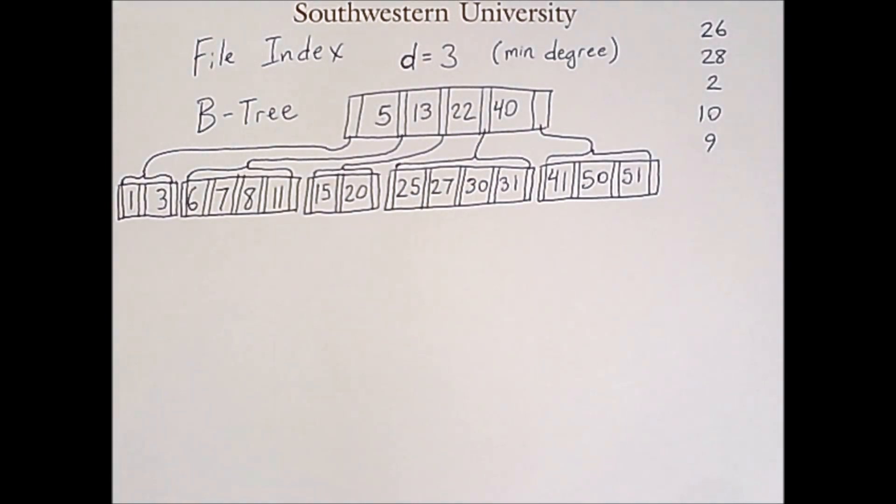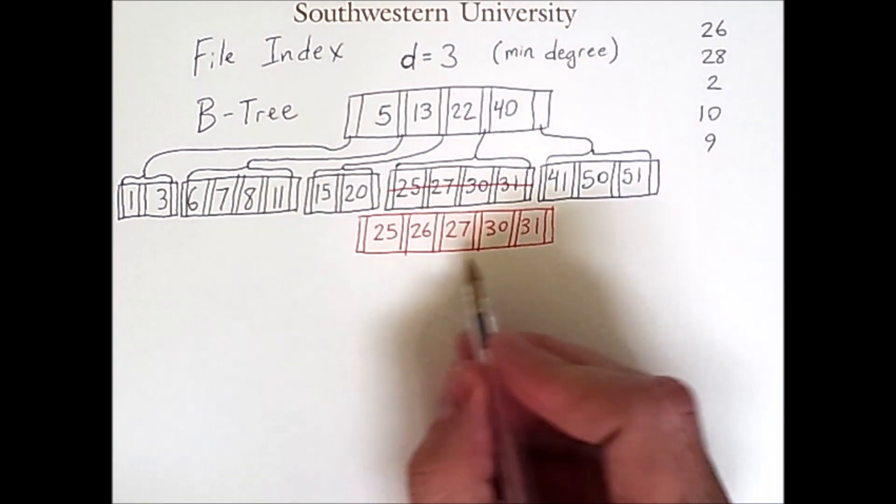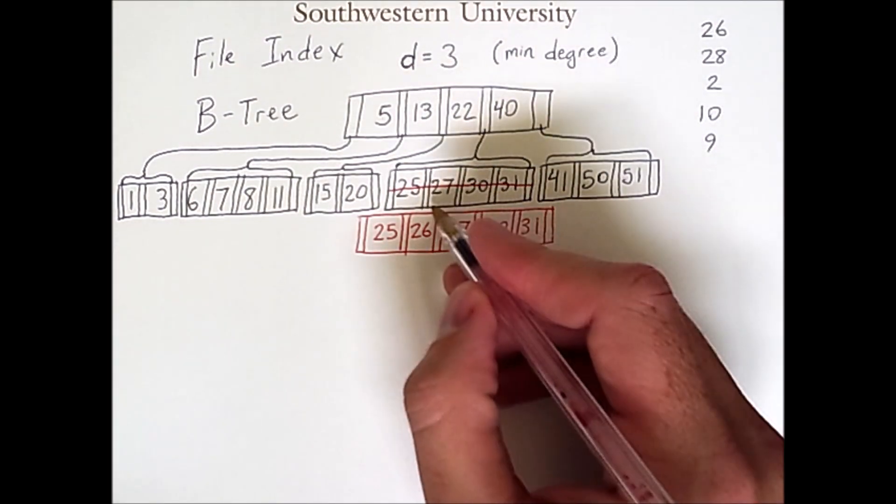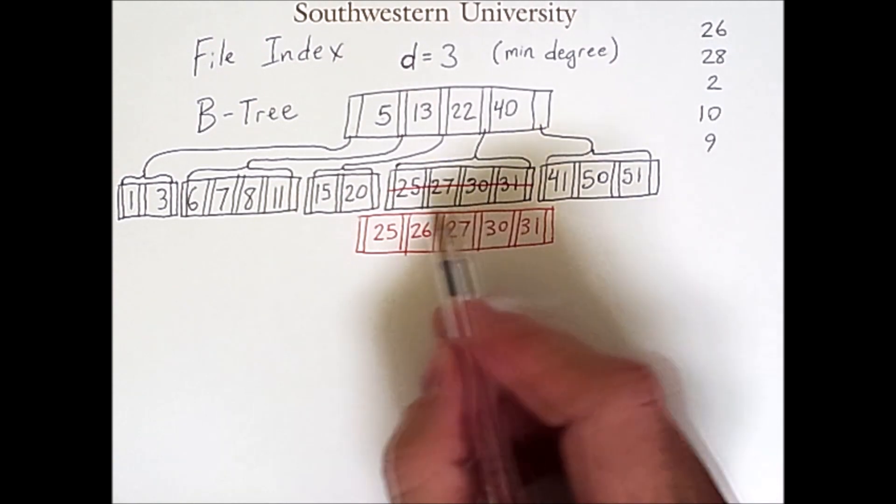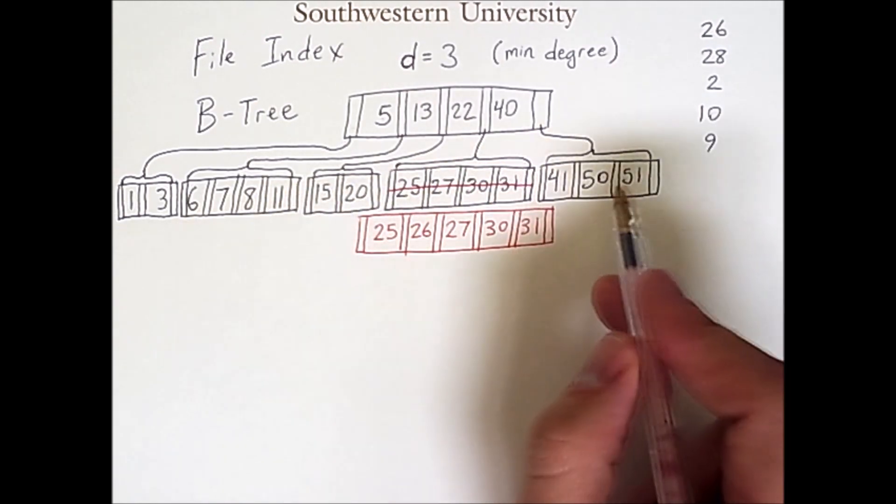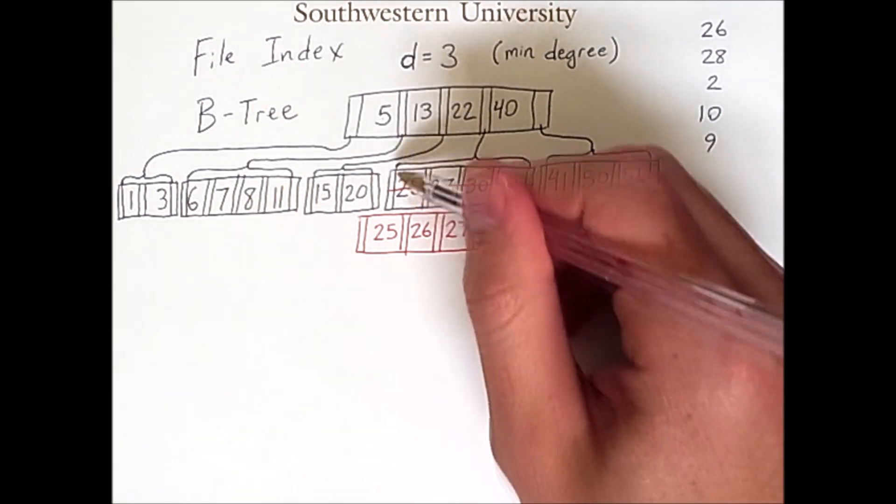So rather than redraw the whole tree, I'm just going to use a red pen to denote modifications like so. So this child node now has 26 in it. It has been added to this node. All of these leaves are now at the same level, because this is replacing this structure here.